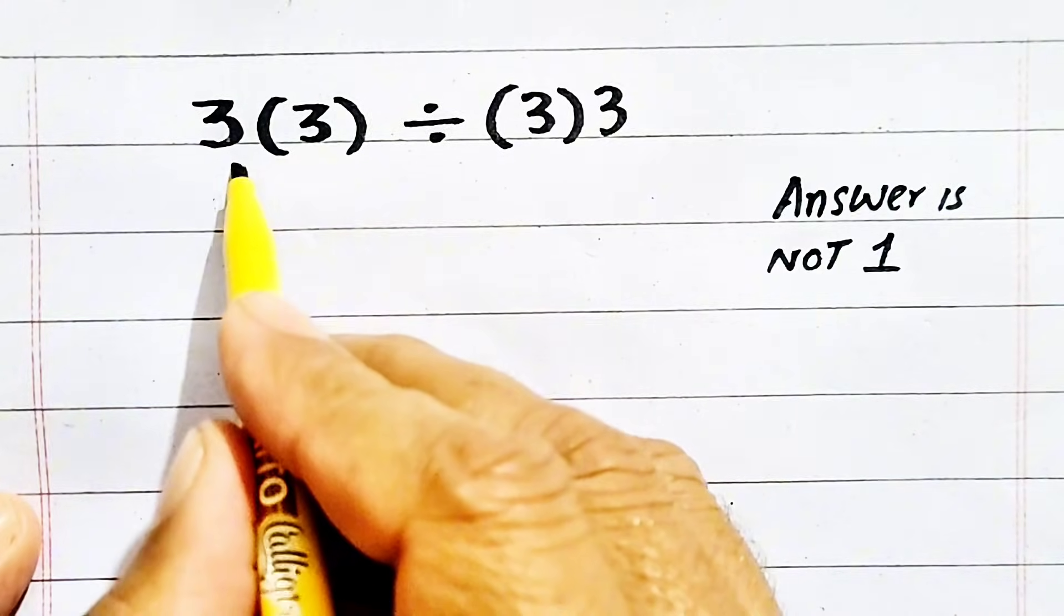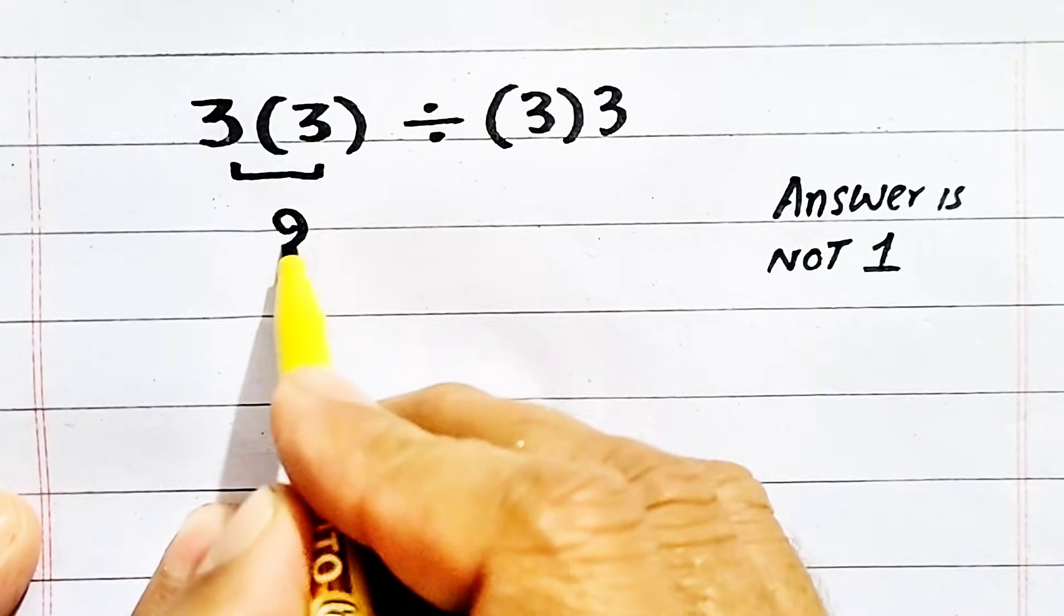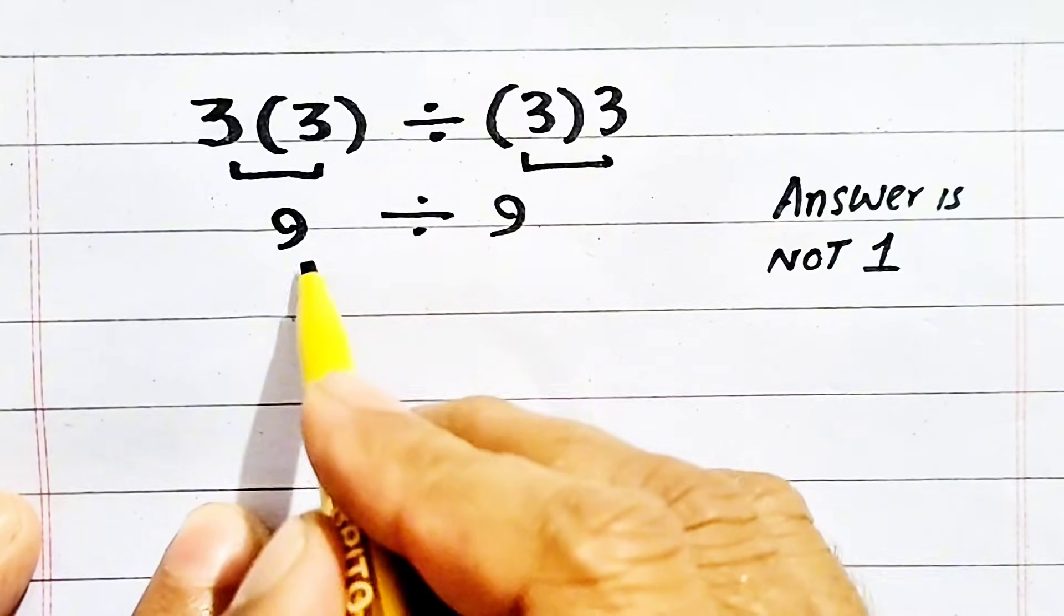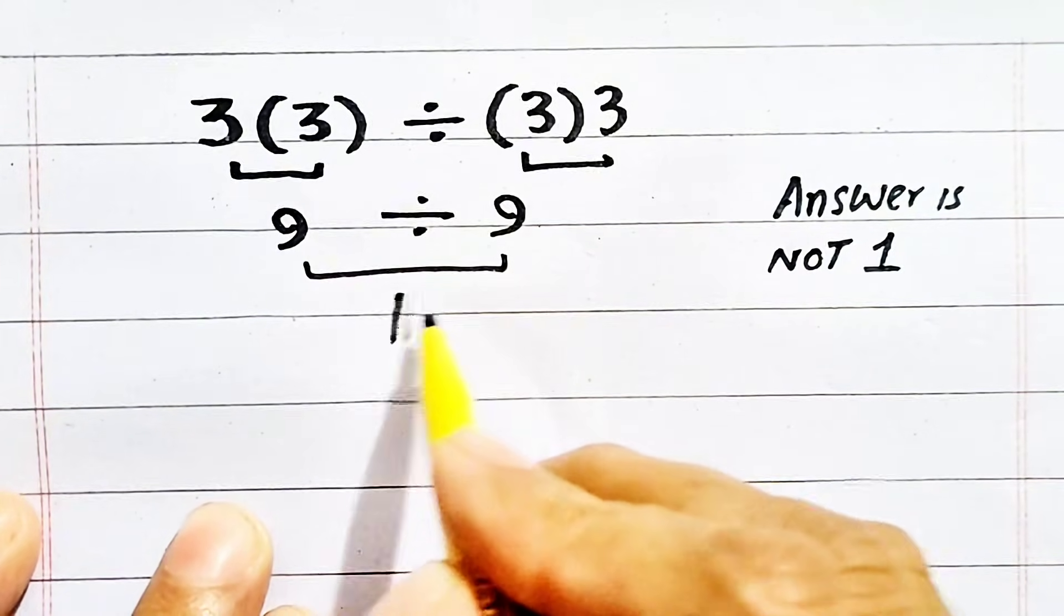Hello, respectable audience. 3 times 3 is 9 divided by 3 times 3 is 9. 9 divided by 9 is 1.